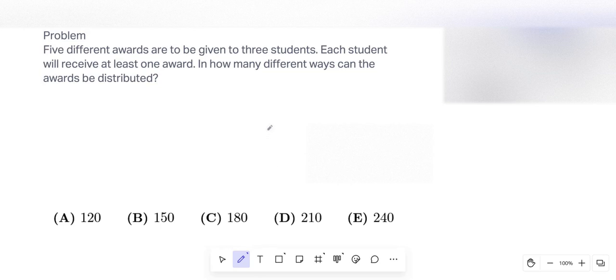Five different awards are to be given to three students. Each student will receive at least one award. In how many different ways can the awards be distributed? First, let's imagine this part did not exist. There's no restriction. Then it's simple.